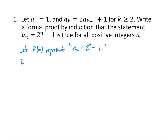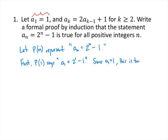First, we look at what P of 1 says. P of 1 says — putting in 1 for n — a sub 1 equals 2 to the 1 minus 1. We're told that a sub 1 equals 1, and so that matches. Since a sub 1 equals 1, this is true. The base case is usually pretty straightforward based on the information you're given.